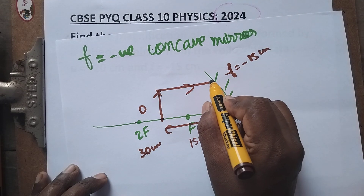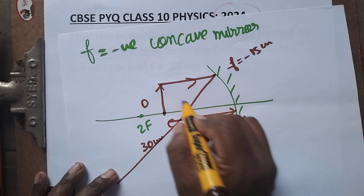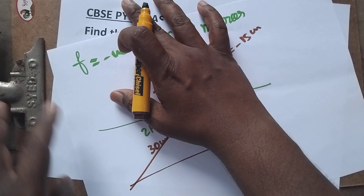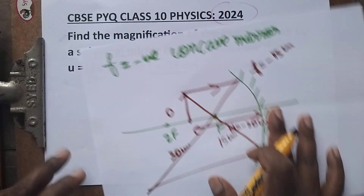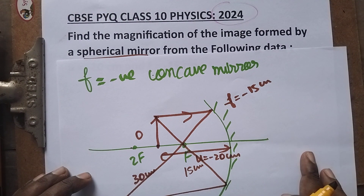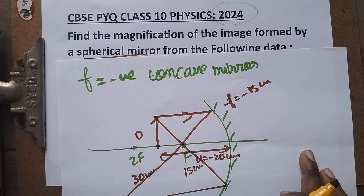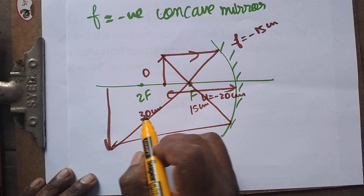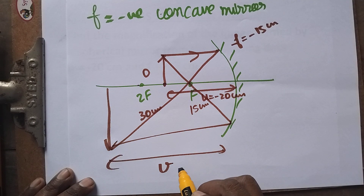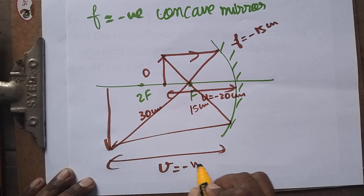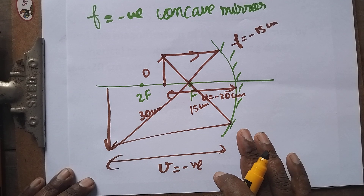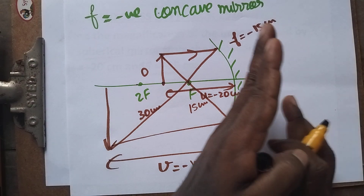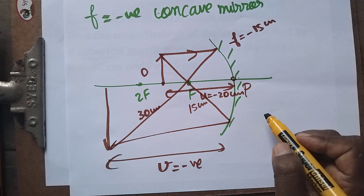The ray parallel to the principal axis passes through the focus, and the ray passing through the focus becomes parallel. We're drawing the diagram to understand the characterization and to find the expected magnification. The image is formed beyond C, so the v value will be more than 30 cm and also negative, using the sign convention where everything to the left of the pole is negative. So both u and v are negative.